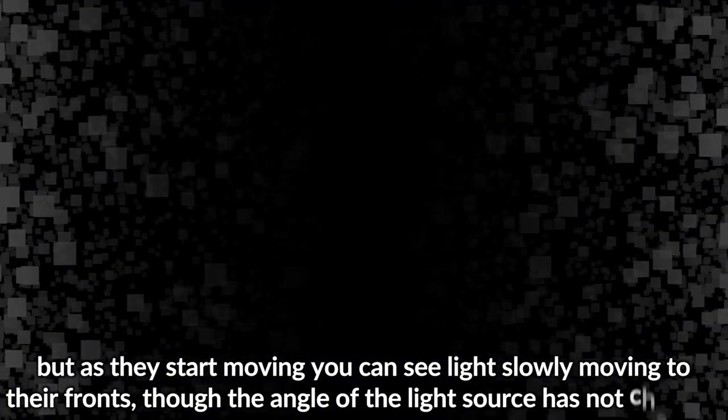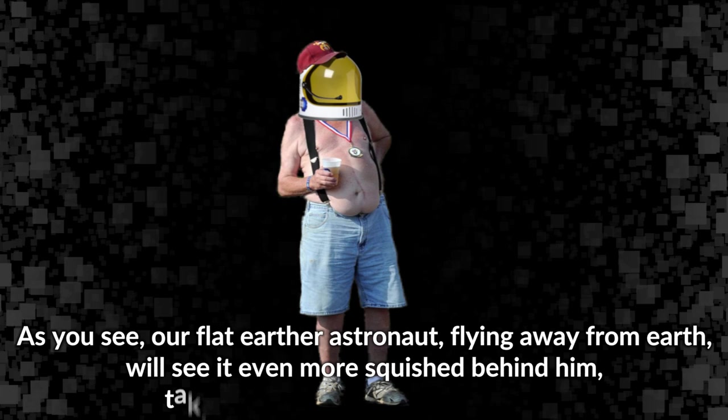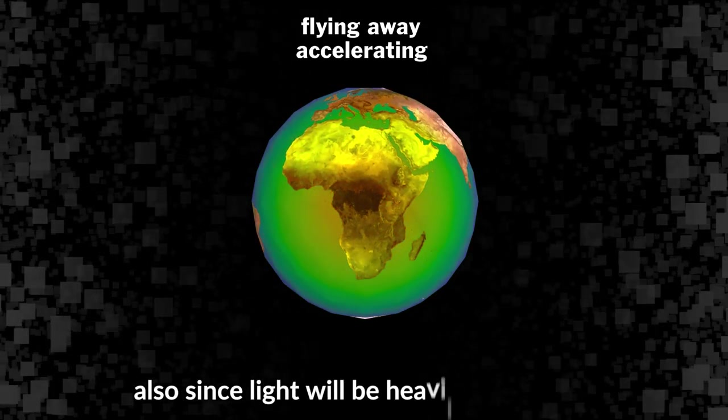But as they start moving, you can see light slowly moving to their fronts, though the angle of the light source has not changed. As you see, our flat-earther astronaut flying away from earth will see it even more squished behind him, taking light aberration into account.